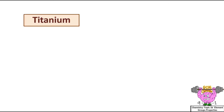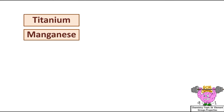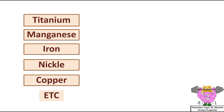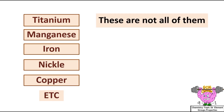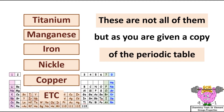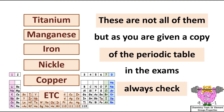Transition metals include titanium, manganese, iron, nickel, copper, and others. These are not all of them, but as you're given a copy of the periodic table in the exams, always check to see which are the transition metals if you're not sure.